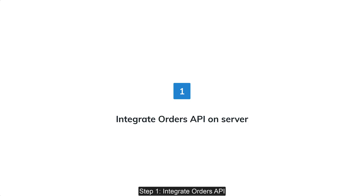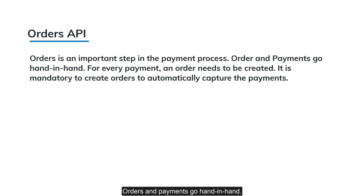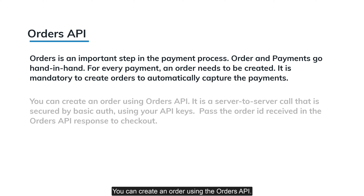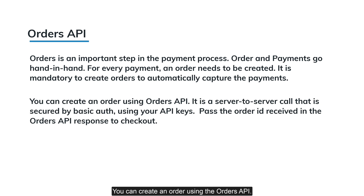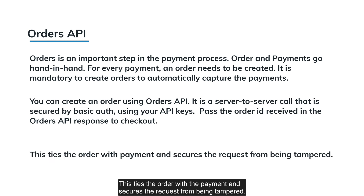Step 1: Integrate Orders API. Order is an important step in the payment process — orders and payments go hand in hand. For every payment, an order needs to be created. It is compulsory to create orders to capture payments automatically. You can create an order using the Orders API. It is a server-to-server call secured by basic auth using your API keys. Pass the order ID received in the Orders API response to checkout. This ties the order with the payment and secures the request from being tampered.